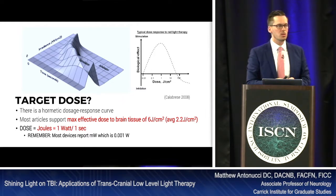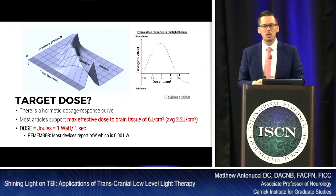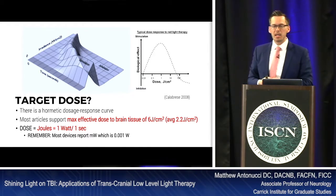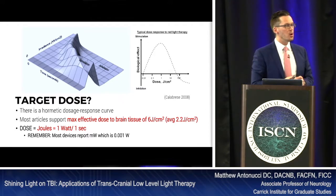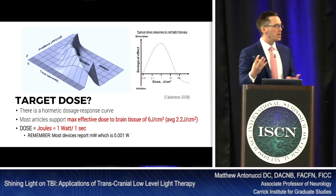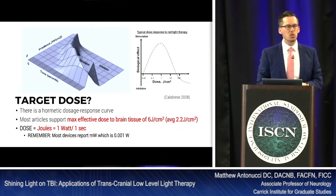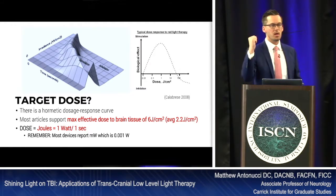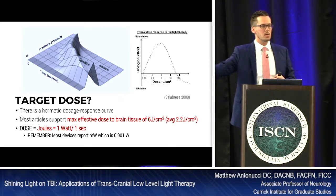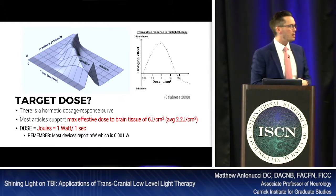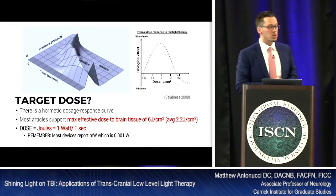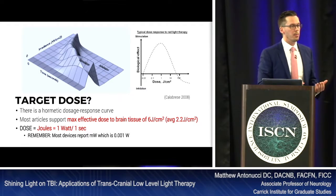The literature supports a maximum tissue dosage for photoneuromodulation of about six joules per centimeter squared, with an average target of about 2.2 joules per centimeter squared. Importantly, this is not what you deliver from your instrument — we need to look at it from the tissue's perspective and work backwards. Dose is measured in joules, and one joule equals one watt per second.